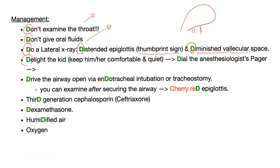Delight the kid — be nice and charming. Keep them comfortable and quiet because they're trying to breathe carefully. Do not irritate them. Dial the anesthesiologist because it's their job to secure the airway. If there is no anesthesiologist, you do it yourself because it's an emergency — that's common sense. Why the anesthesiologist? Because this is acute inflammation: redness, hotness, swelling, pain, and loss of function — it's very hard to even recognize the airway in this red hot mess. So leave it to the expert. The anesthesiologist will drive the airway open by endotracheal intubation or even tracheostomy.